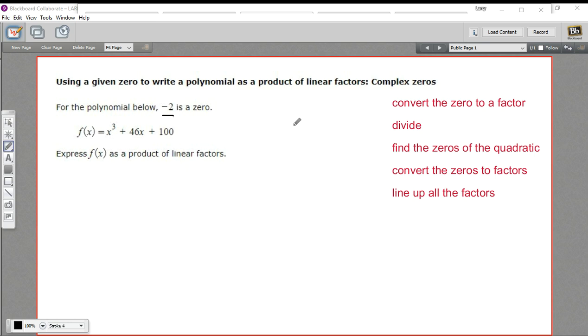Well, this is a complicated problem, and we're going to take it step by step. We're going to take that zero and convert it to a factor first. Then we're going to do some polynomial long division. That's going to allow us to get a quadratic out of this thing after we divide out the factor that we'll get from that zero.